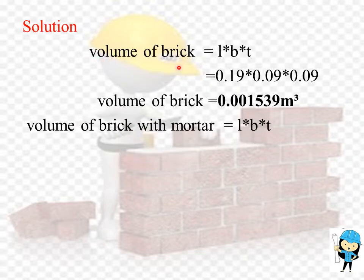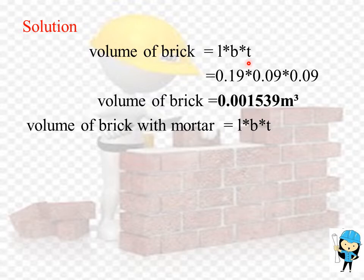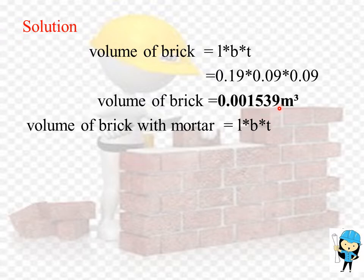The volume of the brick is calculated by the formula length times breadth times thickness. The length of the brick is 0.19 m, the breadth is 0.09 m, and the thickness is 0.09 m. By multiplying these three values we get the volume of one brick, which is 0.001539 meter cube.